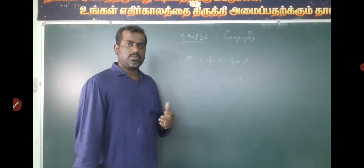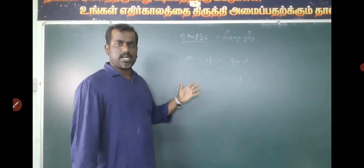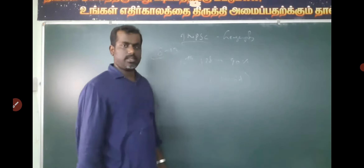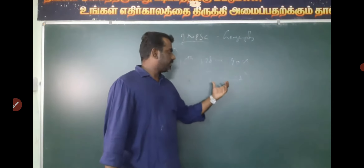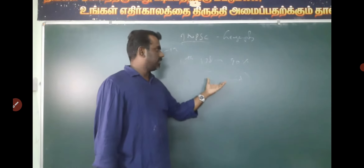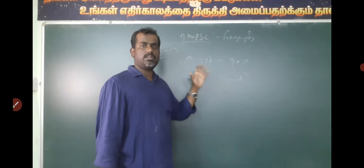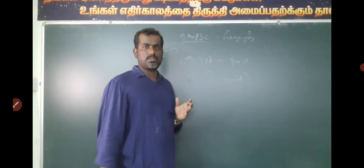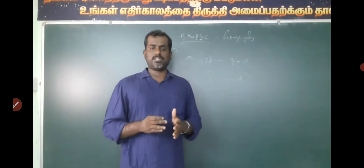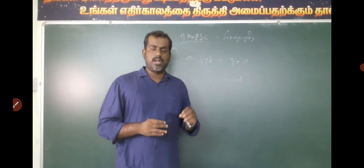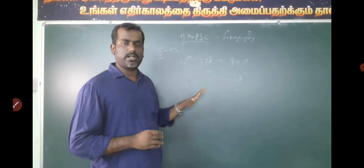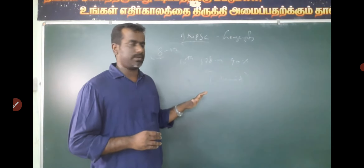For Group 4 and Group 2 exams, questions are asked from the 10th standard level. You must also cover the basic population topics. You can start from the 6th standard and work up through the 10th standard sections.